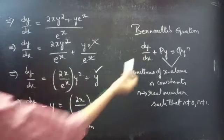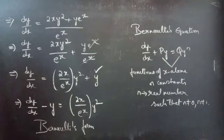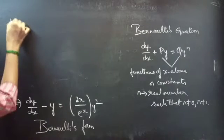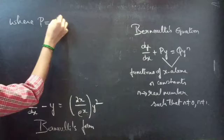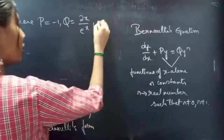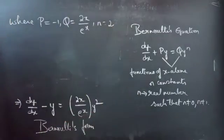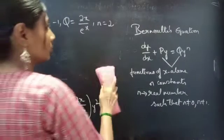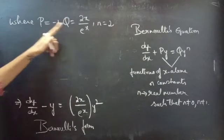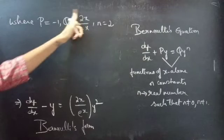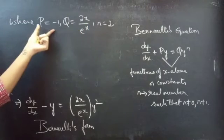By comparing these two equations we can say that we have reduced the given equation to Bernoulli's form. Comparing the two, we get P equals minus 1, Q equals 2x by e^x. Comparing y² with y^n we get n equals 2, which is a real number not equal to 0 and not equal to 1. Here P equals minus 1 is a constant and Q equals 2x/e^x is a function of x alone.